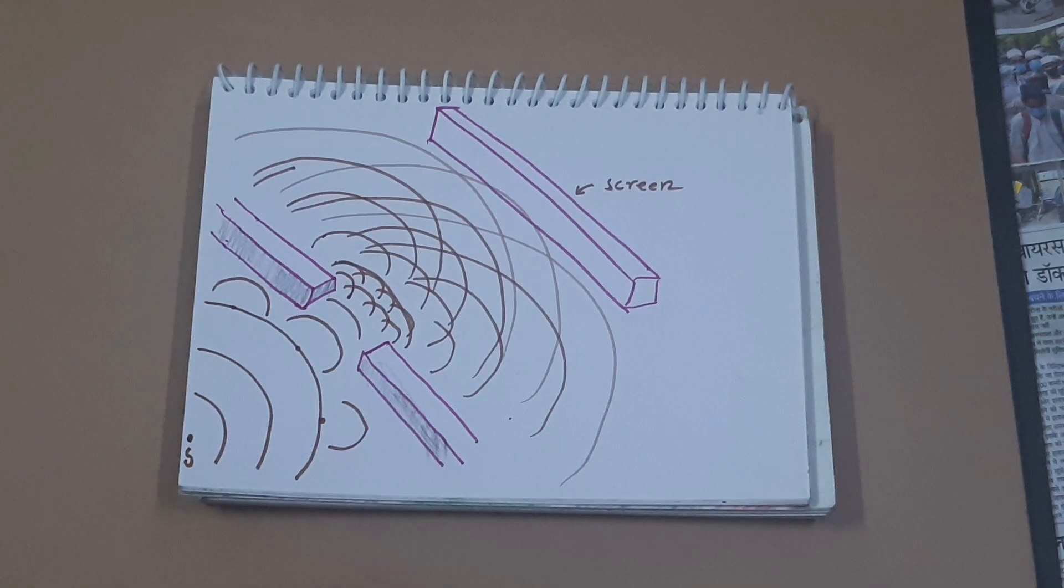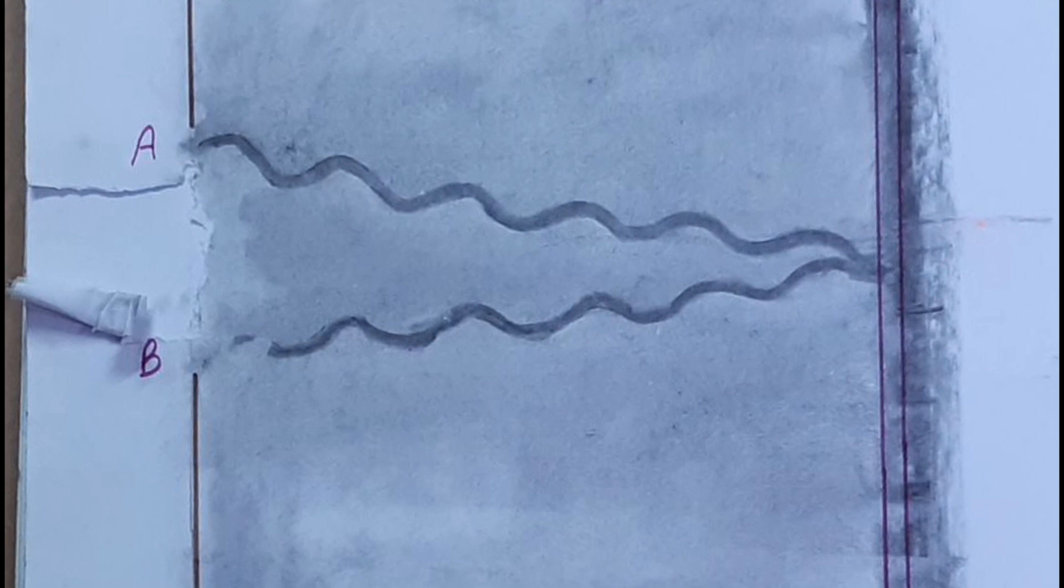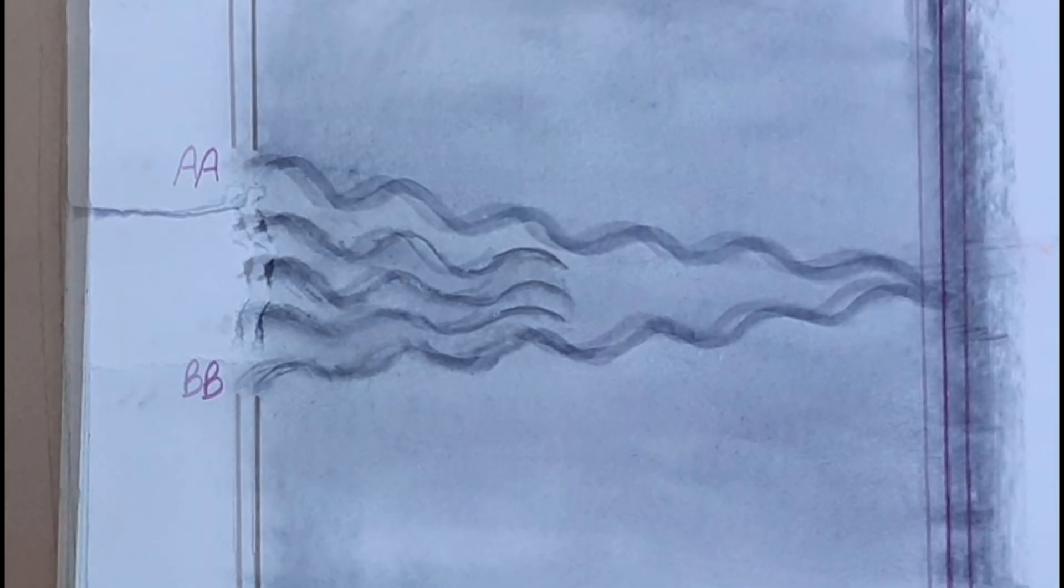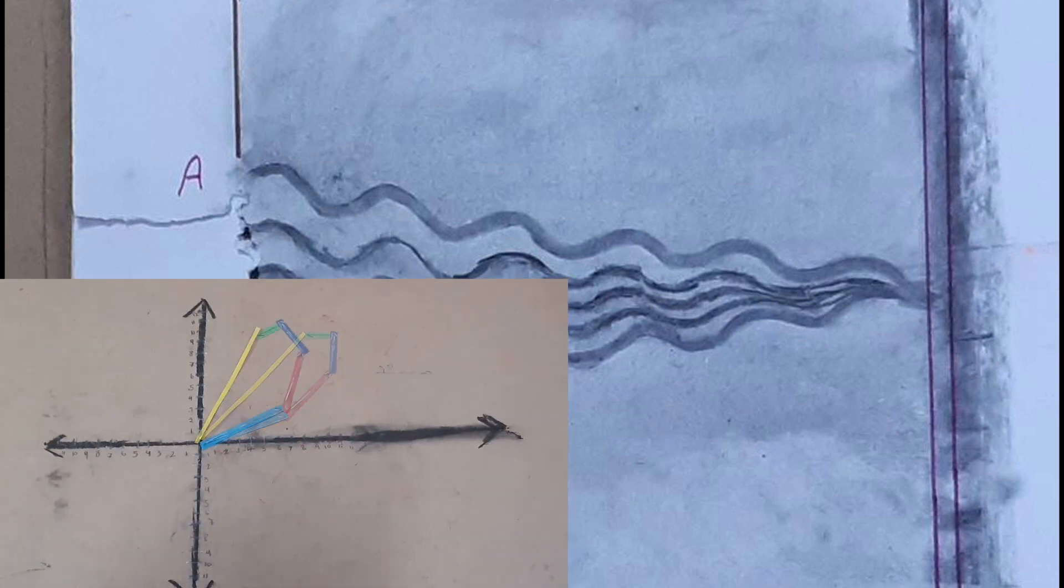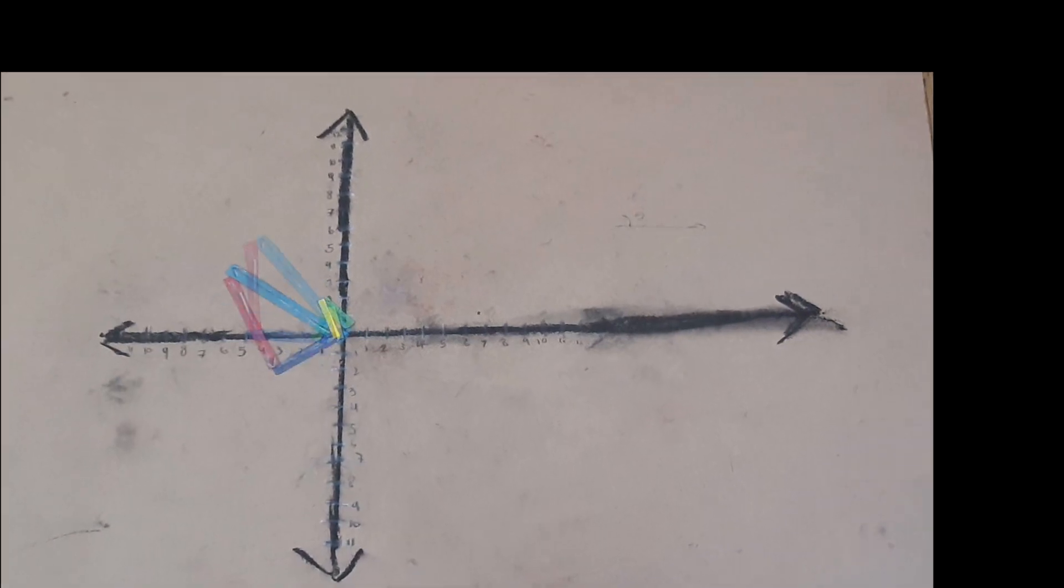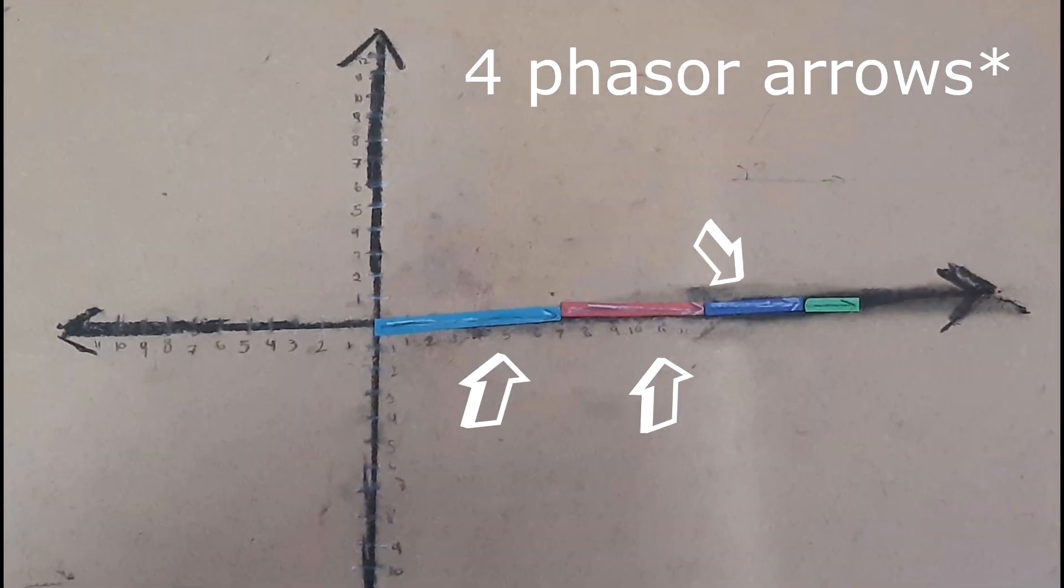Now let's consider diffraction. After removing the slit, we find many waves interfering with each other at a single point. To understand this on a phasor diagram, we need many phasor arrows. Here I have used five phasor arrows to represent it.